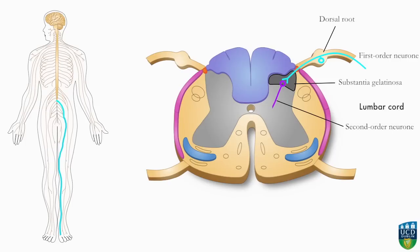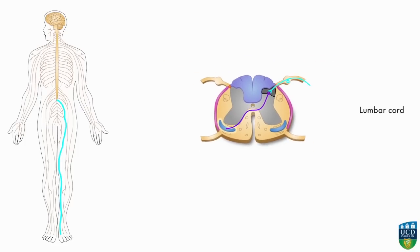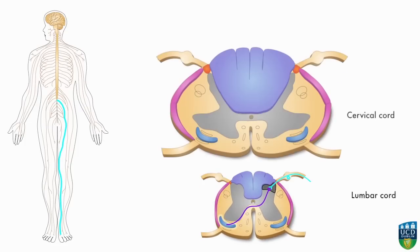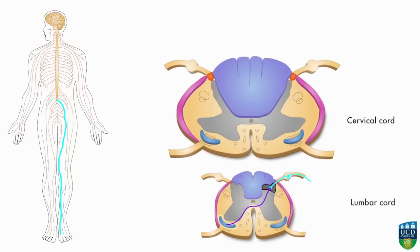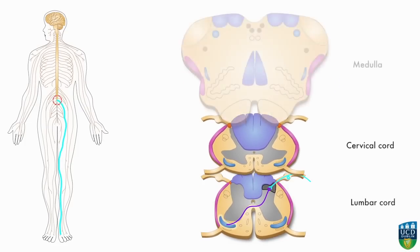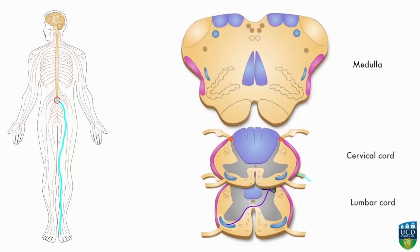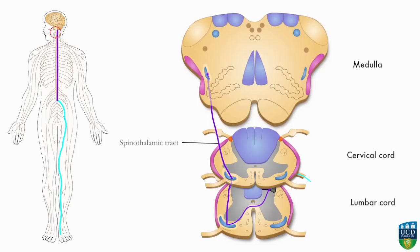The second order neuron crosses over through the ventral white commissure before entering the spinothalamic tract. It then continues to course upwards through the spinal cord, carrying the impulse in the spinothalamic tract.